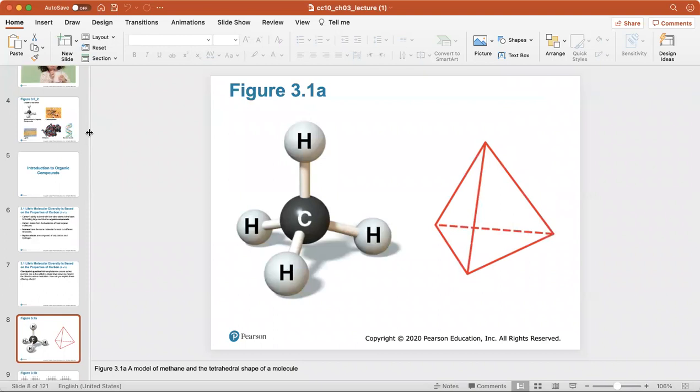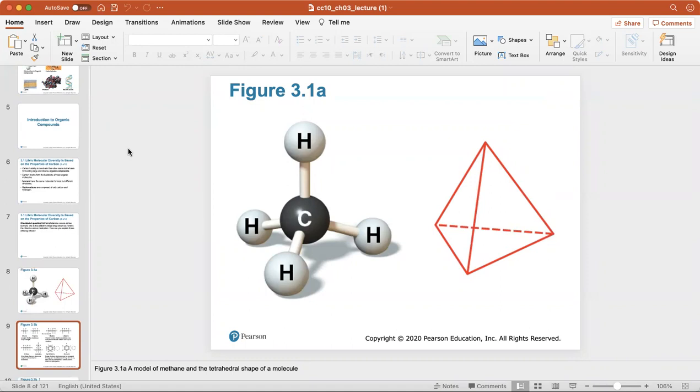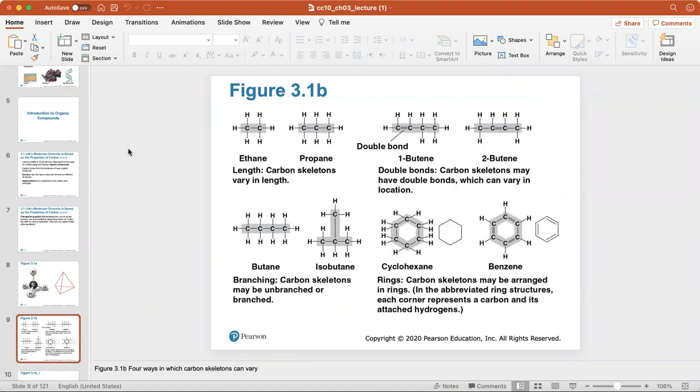This is a look at how methane is arranged. There's a carbon atom in the middle with four hydrogen atoms around it, and it has this pyramidal type shape. Here's a look at how carbon skeletons may be arranged in rings or vary in length, or there could be a double bond if there is a double line between the carbon atoms. These are four ways in which carbon skeletons could vary.